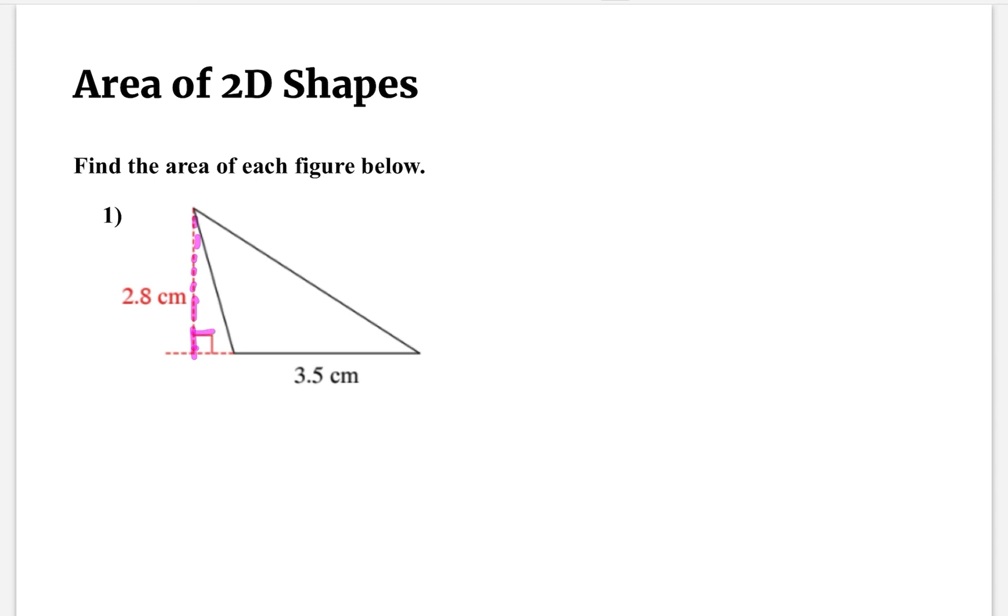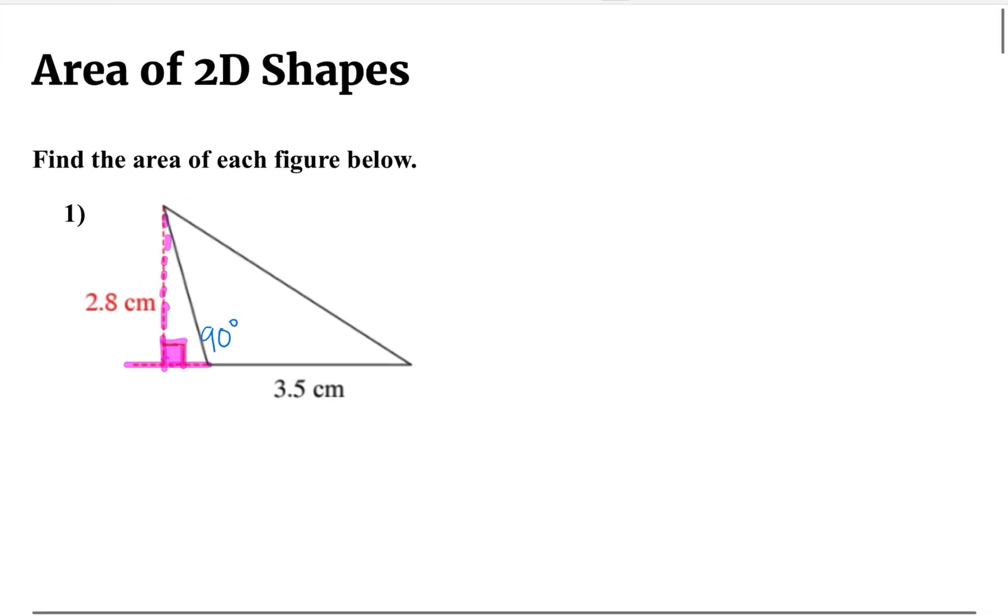So in this area we are given the height. How do I know it is the height? Because this part of the triangle touches this part of the triangle and creates a 90 degree angle. The box will tell us that a 90 degree angle is created, therefore this is going to be considered the height.